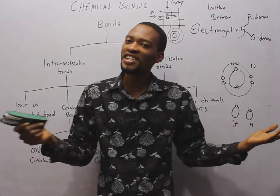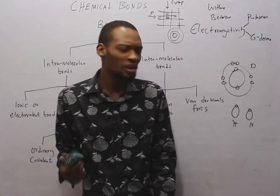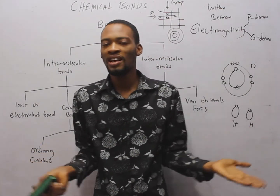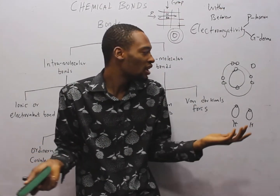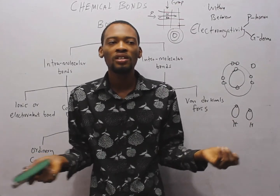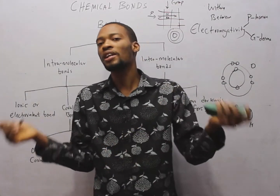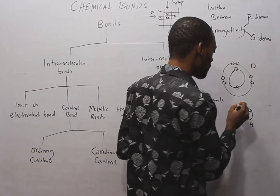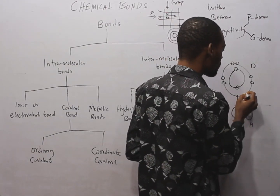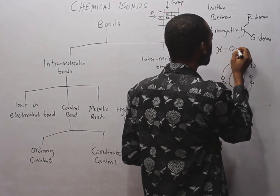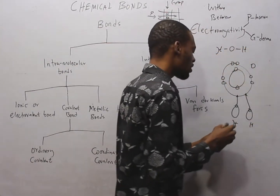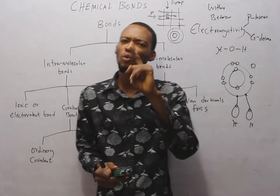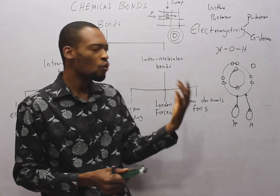Each hydrogen says it only has one electron and can't give it away because it also needs to be stable. After deliberation, they agree to share electrons — each hydrogen sticks to the oxygen, giving H₂O. So in water, we have covalent bonds, and also hydrogen bonding.